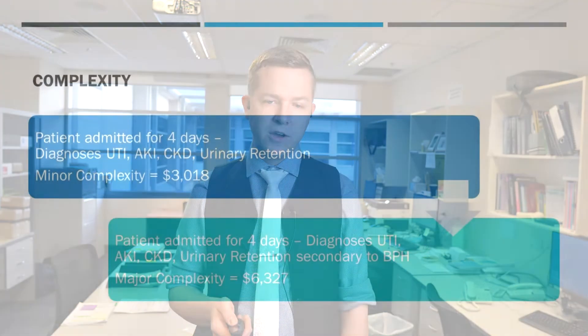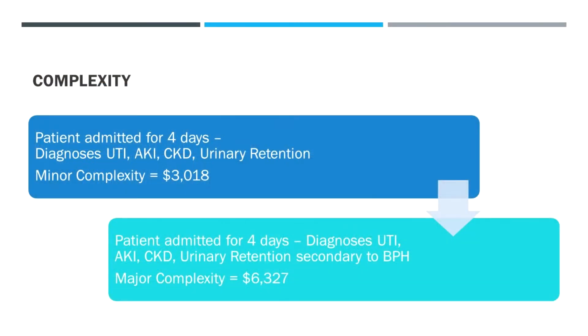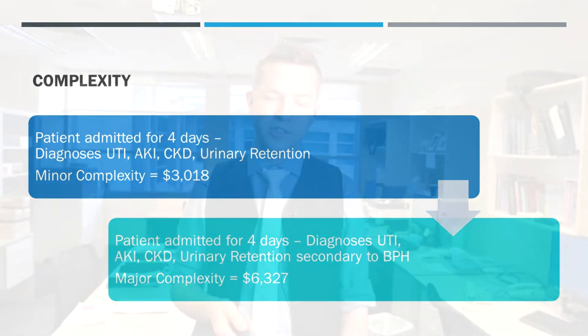A patient admitted for four days with UTI, AKI, CKD, and urinary retention. Again, if we add BPH as the urinary retention cause, we increase the complexity and double the income.